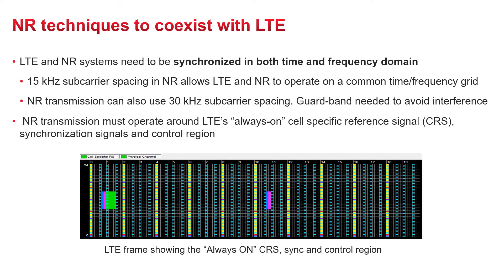Let's now look at the techniques adopted by 5G NR. LTE and NR systems need to be synchronized in both the time and frequency domain. When using 15 kHz subcarrier spacing for NR, both technologies can operate on a common time-frequency grid. NR can also operate with 30 kHz spacing; however, 15 kHz is expected to be used for initial implementation. For the rest of the video, 15 kHz spacing is assumed.